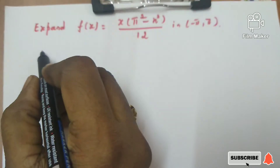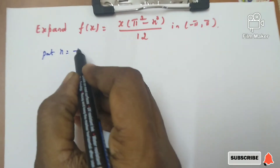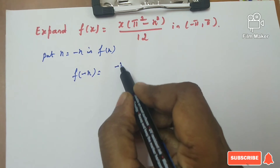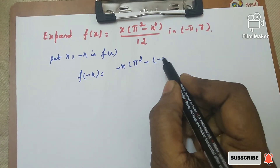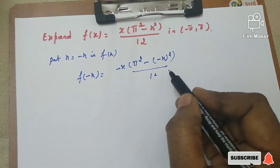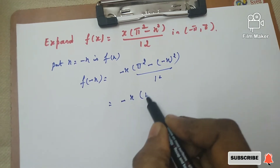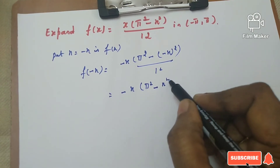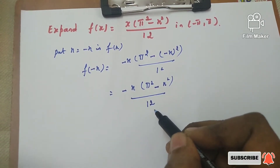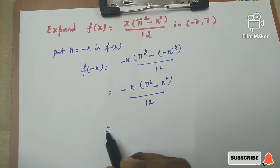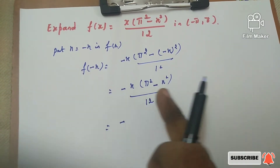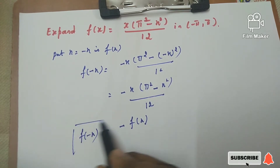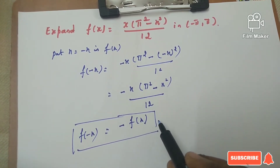Put x equal to minus x in the given f(x). On the left hand side, f(-x) equals, wherever x comes we replace it with minus x: (-x)(π² - (-x)²)/12, which equals -x(π² - x²)/12. Taking the minus outside, we get -x(π² - x²)/12, which is nothing but -f(x). So f(-x) = -f(x), meaning the given function is an odd function.